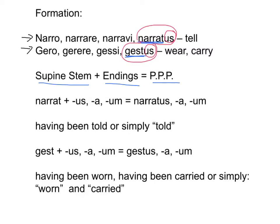In an example it looks like this: narr- plus -us/-a/-um gives us narratus, narrata, narratum, which means 'having been told' or simply 'told.'